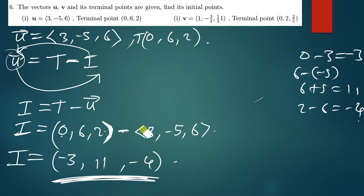Since this is a point we use curved brackets, i.e., parentheses. For vectors we use angle brackets. That's how you solve such a question.